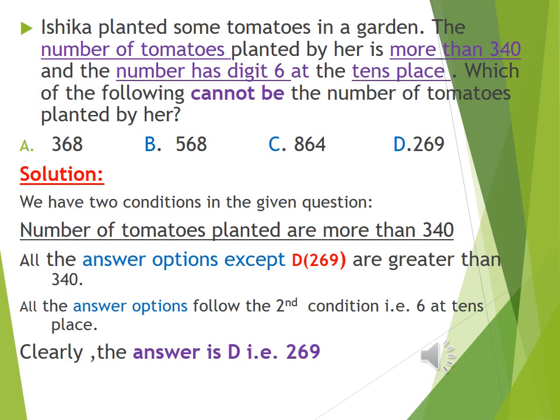Ishika planted some tomatoes in a garden. The number of tomatoes planted by her is more than 340 and the number has digit 6 at the 10's place. Which of the following cannot be the number of tomatoes planted by her? We have two conditions in the given question.